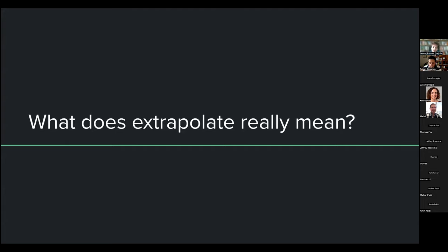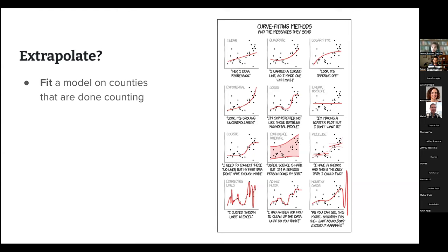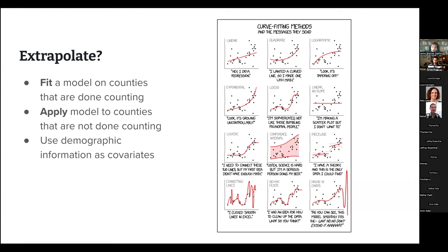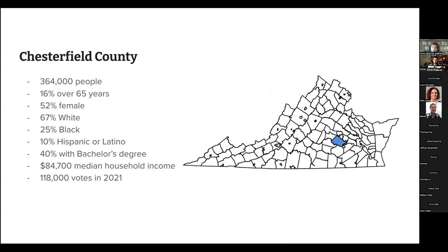Our model extrapolates. What that means in this context: it's a prediction problem where we fit a model to the counties that are done counting, and apply that model to the counties that are not yet done counting. The kinds of features or covariates we use are often demographic information. Let me walk through a toy example to explain what we're doing in a bit more depth.